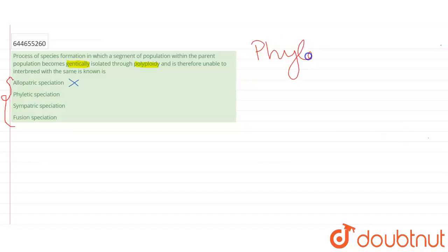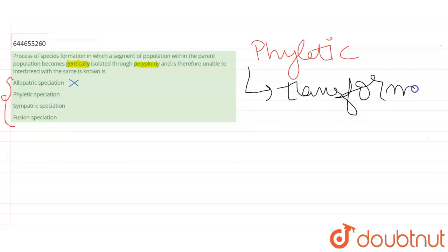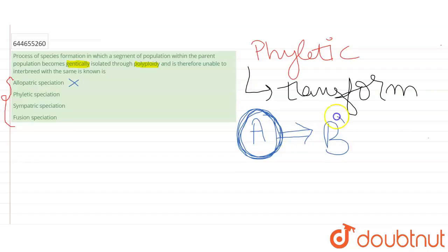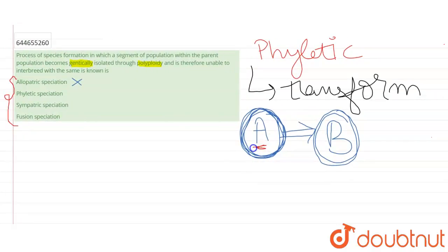In phyletic speciation, there is a complete transformation from one species to another. For example, due to some gradual genetic changes, the whole population of species A transforms into species B — there is a shift from species A to species B across the entire population. This is also not the correct answer, because the question is talking about a particular segment of the population, not the whole population.